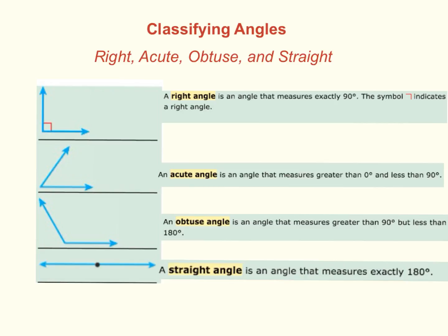We classify angles underneath four different categories. Right, acute, obtuse, and straight. So, to start off, let's look at a right angle. Right angle makes 90 degrees. And we show that by forming a little box around the vertex. So, we know by showing that box, that has an exact measurement of 90 degrees.